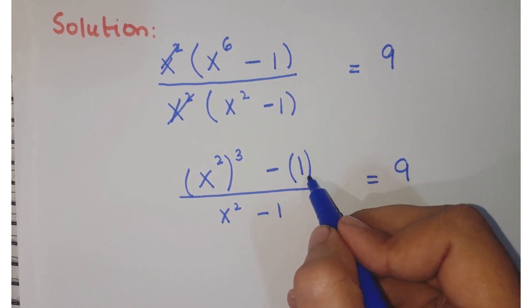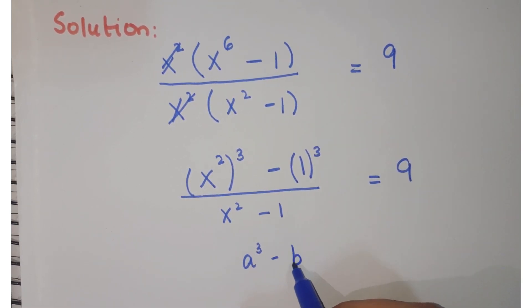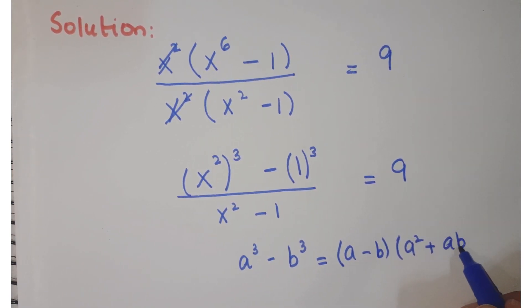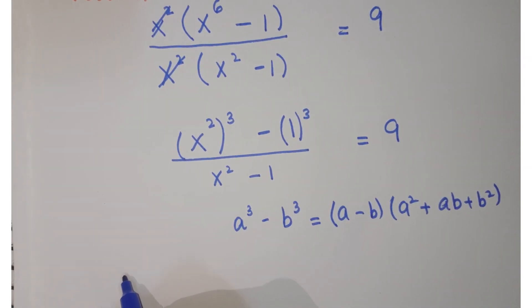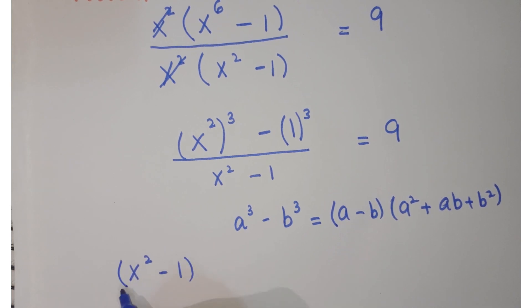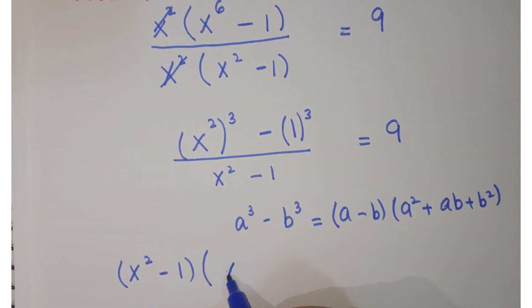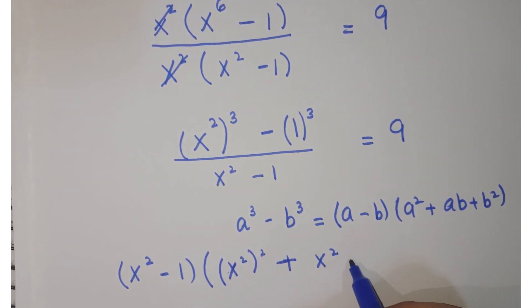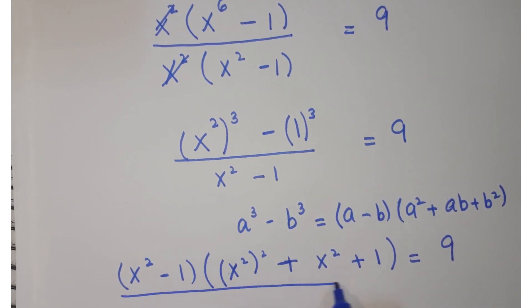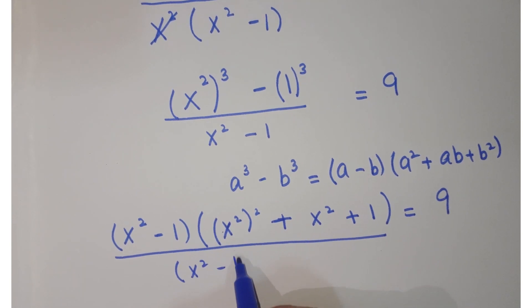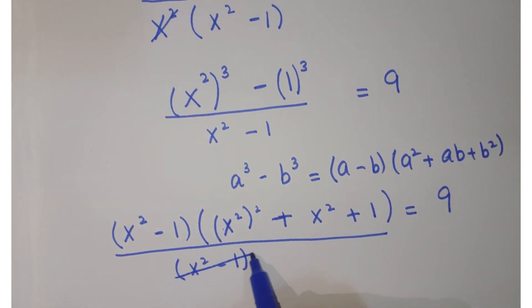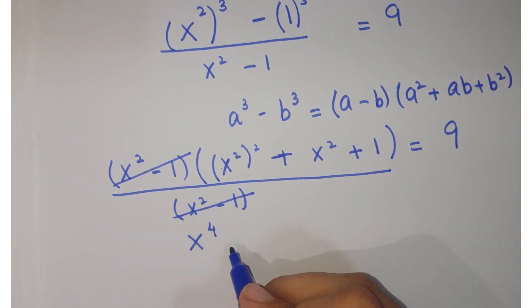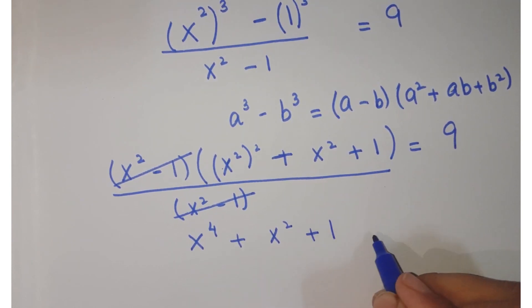Here you can apply the algebraic identity: a cube minus b cube equals a minus b, into a square plus ab plus b square. So just replace it with the identity. You are left with x squared minus 1, and then a squared, so you get x squared whole squared plus x squared plus 1, equals to 9. The denominator has x squared minus 1, and this term and this term get cancelled.